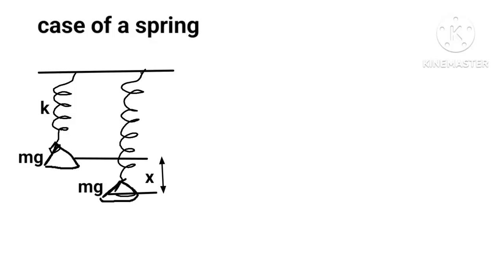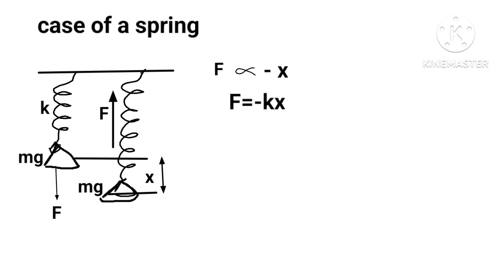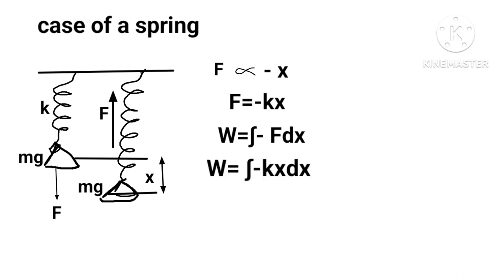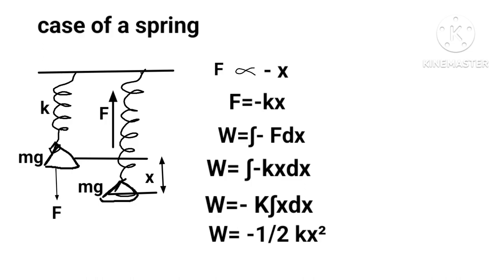Let a spring of spring constant k be stretched by x when a force F is applied. By Newton's third law, an equal restoring force is produced that tends to bring the body back to its original position. Since F is directly proportional to −x, we have F = −kx, where k is the spring constant. Therefore, work done W = ∫(−F)dx = ∫(−kx)dx = −½kx².